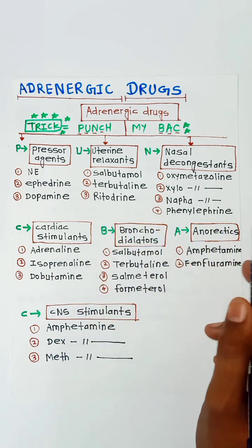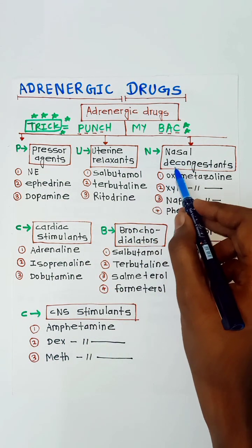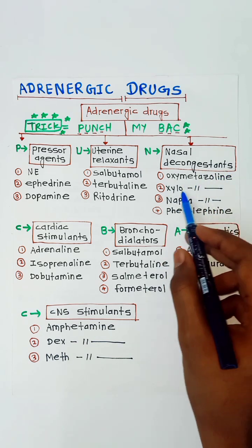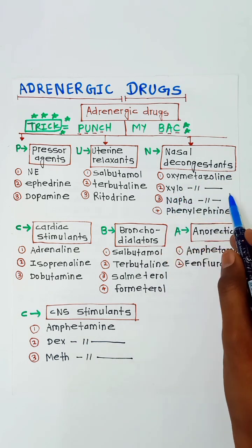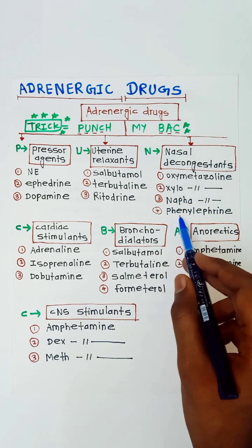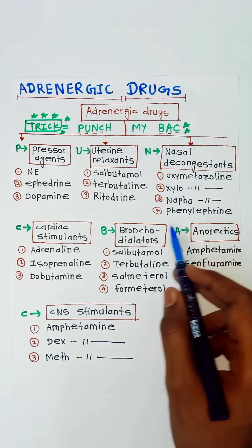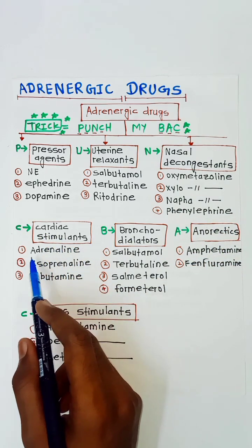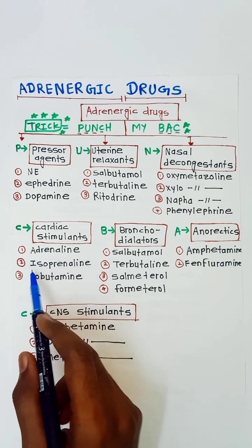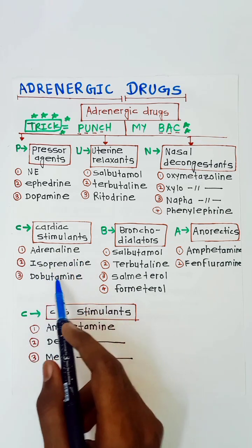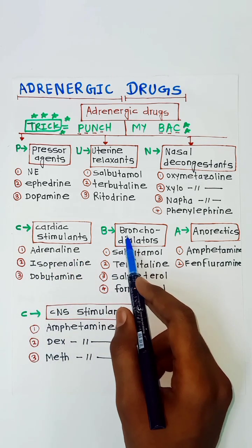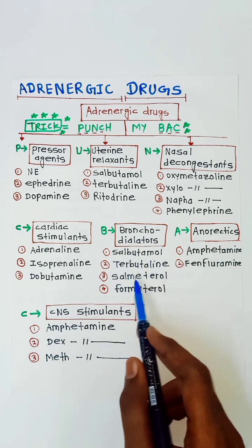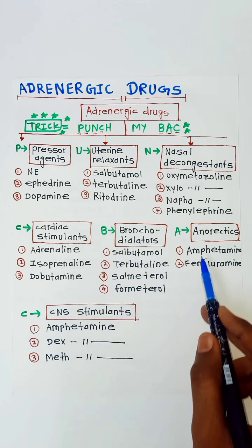One more uterine relaxant is isoxsuprine. For nasal decongestants we have oxymetazoline, xylometazoline, naphazoline, and phenylephrine. For cardiac stimulants we have adrenaline, isoprenaline, and dobutamine. In bronchodilators we have salbutamol, terbutaline, salmeterol, and formoterol.